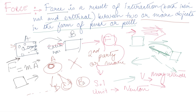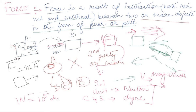The SI unit of force is Newton, and the CGS unit of force is dyne. The relation between Newton and dyne is: 1 Newton is equal to 10 to the power of 5 dyne. This covers the SI and CGS units of force, and now let's understand the mathematical expression of force in more detail.